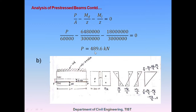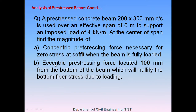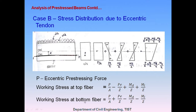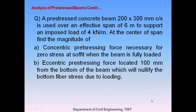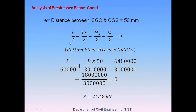P is calculated as 489.6 kN. For the second case, we find the eccentric pre-stressing force. The condition is that the bottom fiber stress equals zero. The equation for the bottom fiber stress with an eccentric tendon is: P/A + PE/Z − MD/Z − ML/Z = 0. We need to find the value of P when this equation equals zero.